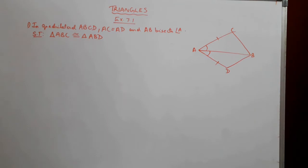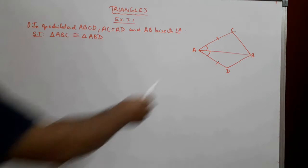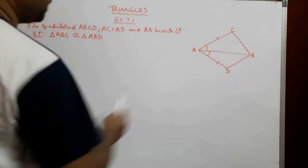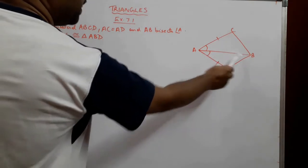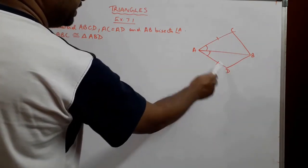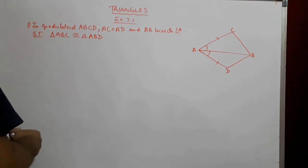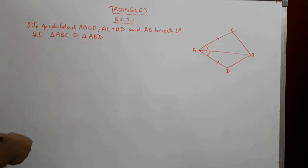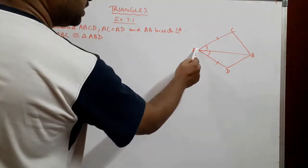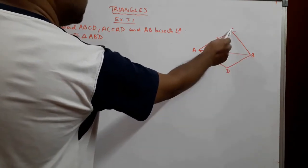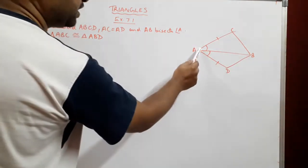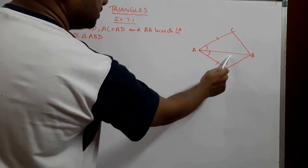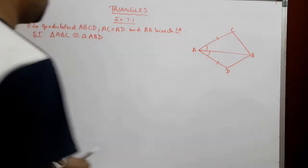The first question is: in quadrilateral ABCD, as shown in the figure, AC is equal to AD, and AB bisects angle A. We are asked to show that triangle ABC is congruent to triangle ABD.